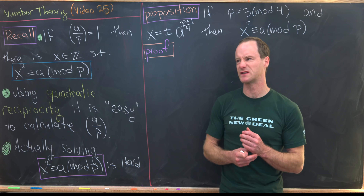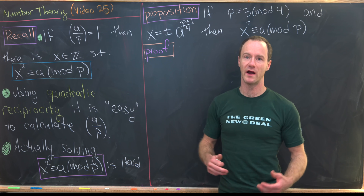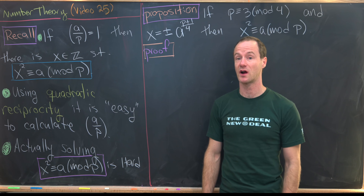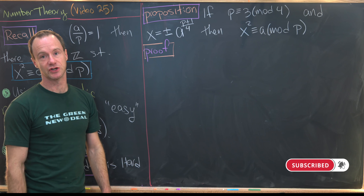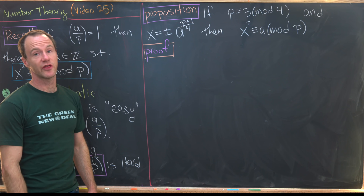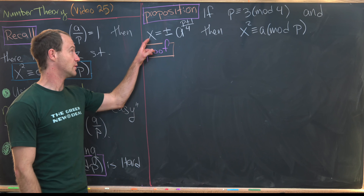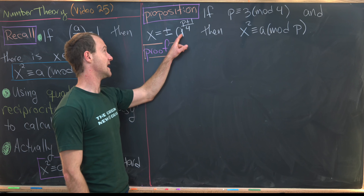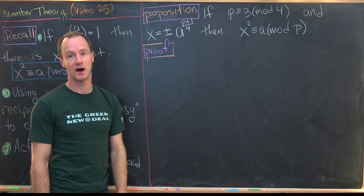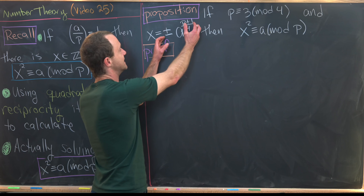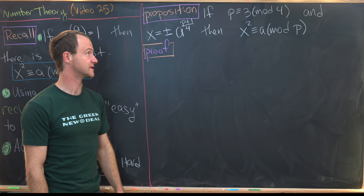There are some special cases where it's not so hard, as we'll see. So let's look at the following proposition: if p ≡ 3 mod 4 — in other words it's of the form 4k+3 — and we set x equal to ±a^((p+1)/4), then x² ≡ a mod p. So we have a specific solution for this congruence.